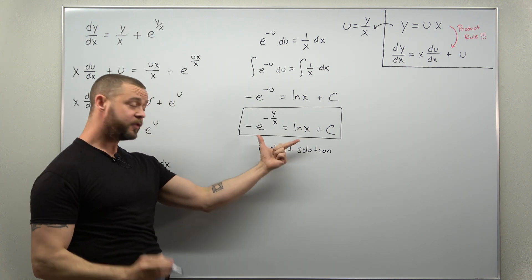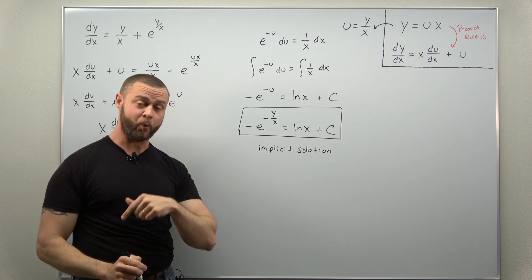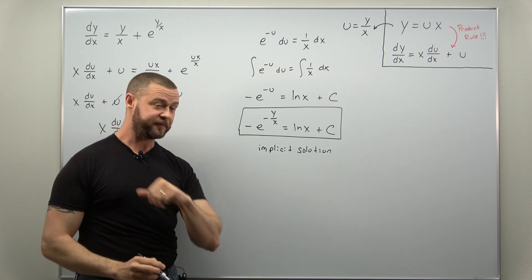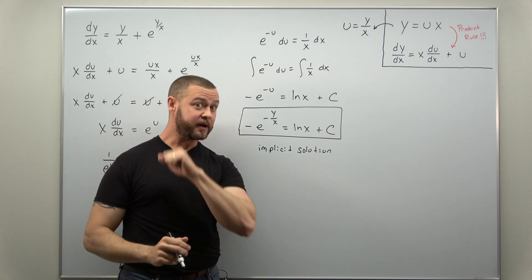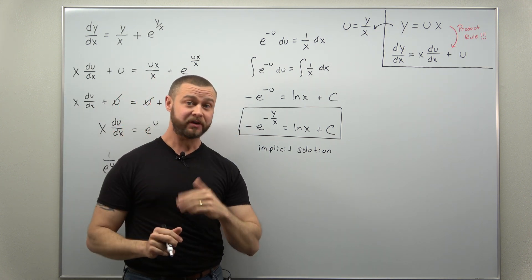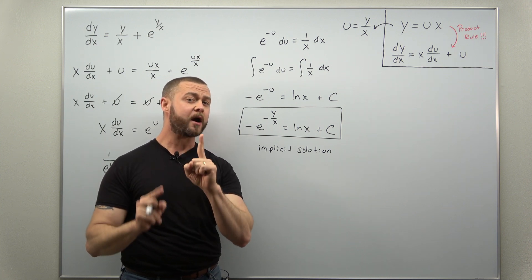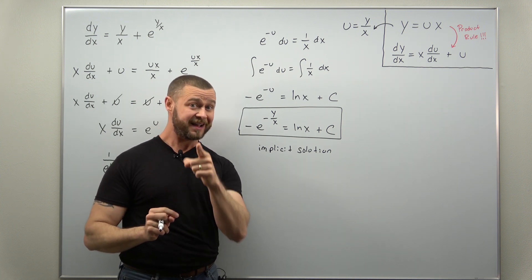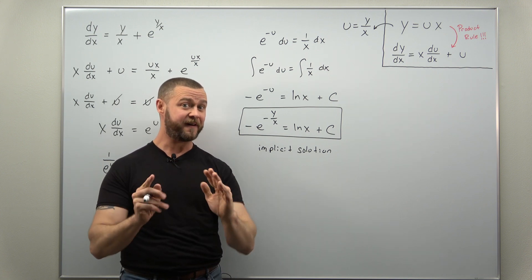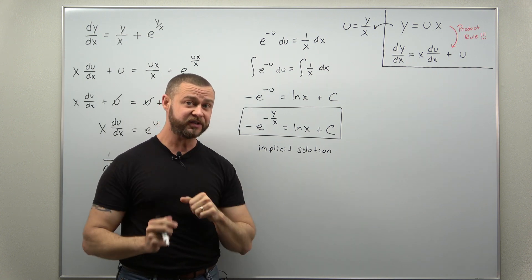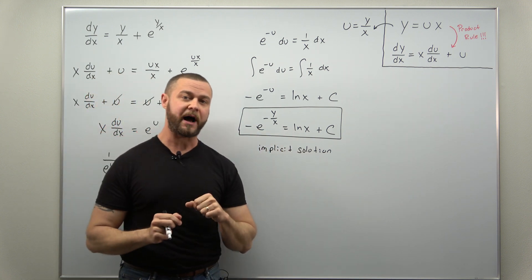As it turns out, you can get an explicit solution by solving y as a function of x with a little bit more work. But that's our implicit solution and that's all we're looking for here. Just make sure you're aware of what your professor is looking for — you might be asked to find an explicit solution, in which case go a little further and solve for y.